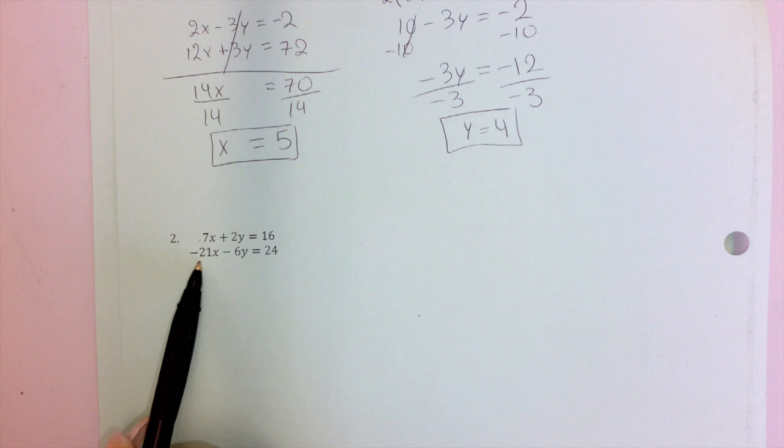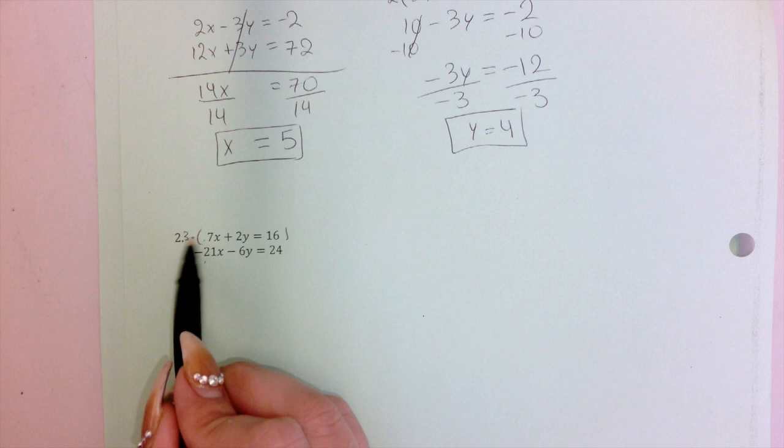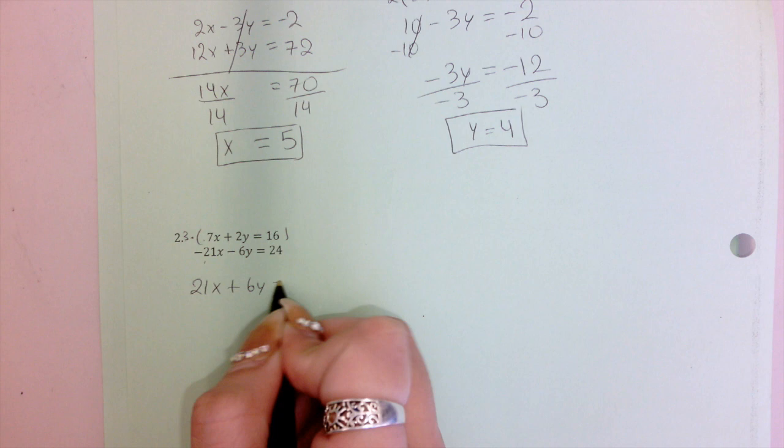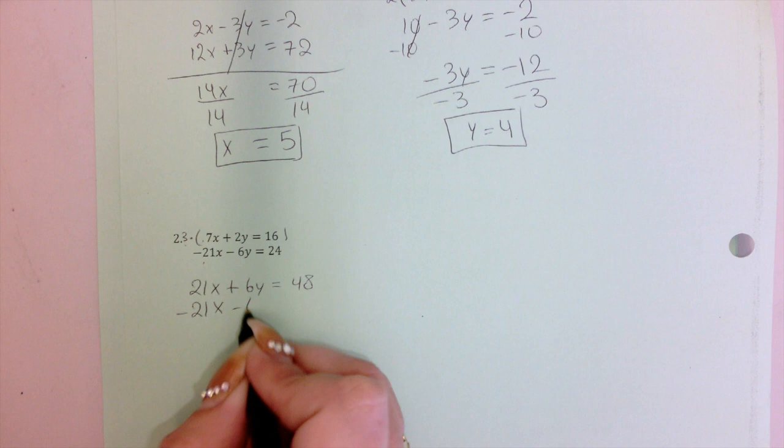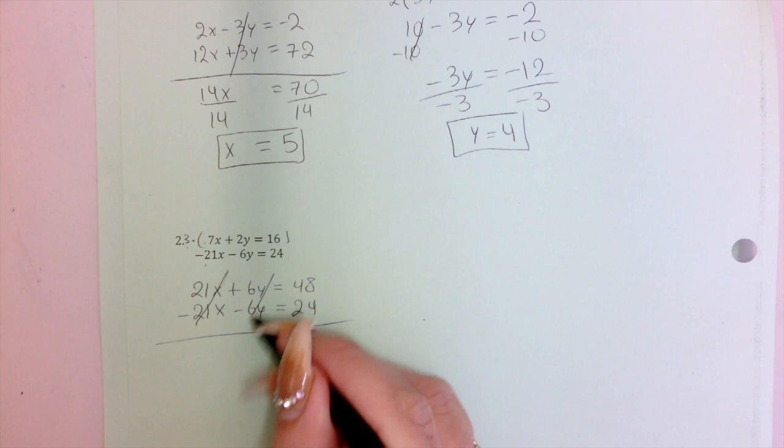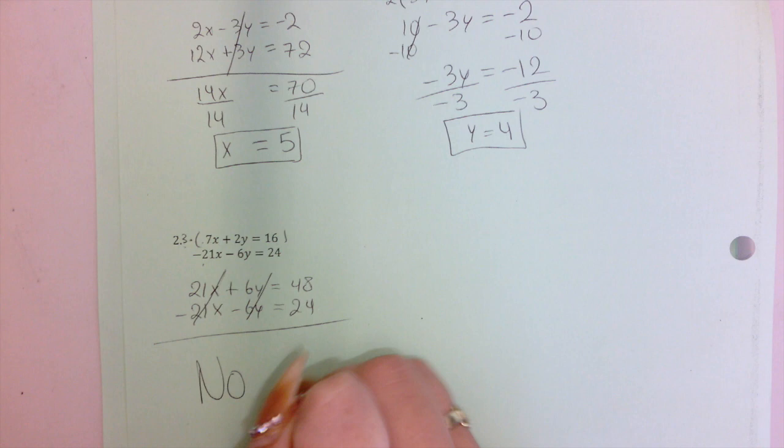For the next problem, I notice that if I multiply the first equation by 3, things might cancel. Multiplying by 3: 3 times 7x gives 21x, plus 3 times 2y gives 6y, equals 3 times 16 which is 48. Writing the second equation below, notice that when you add down all the variables cancel out. When all the variables cancel, there is no solution.